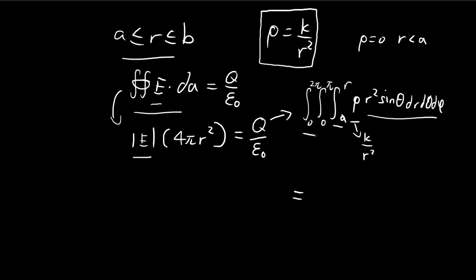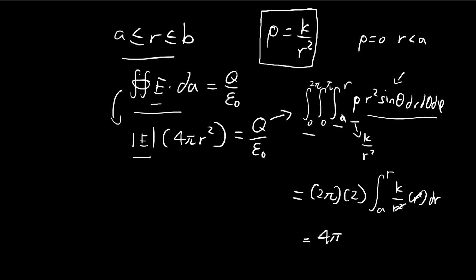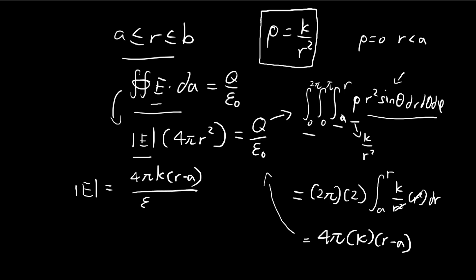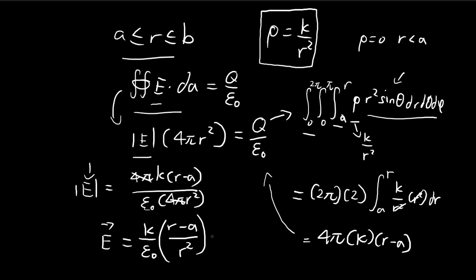For the phi terms we get 2 pi, and the sine theta integral from 0 to pi gives 2. So we're left with the integral from a to r of k over r squared times r squared dr. The r squared terms cancel, giving us 4 pi k times (r minus a). Moving back to the original question, the electric field equals the enclosed charge divided by epsilon divided by the surface area. The 4 pi cancels out, and we arrive at a constant times (r minus a) divided by r squared, in the r-hat direction.